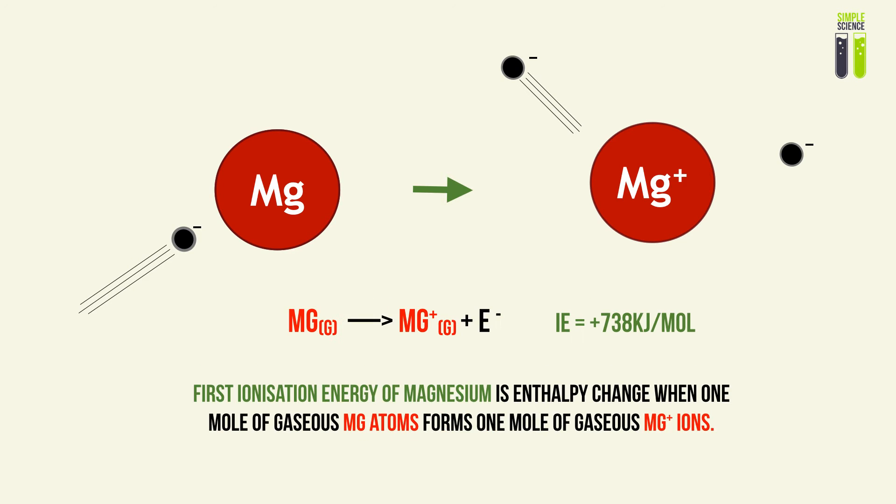Looking at some examples — magnesium. The first ionization energy of magnesium is the enthalpy change when one mole of gaseous Mg atoms forms one mole of Mg⁺ atoms. This first ionization energy would be the kinetic energy required for one mole of electrons to bombard the magnesium atoms and knock off the electrons.